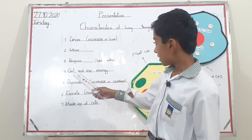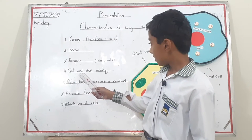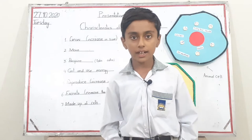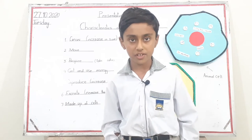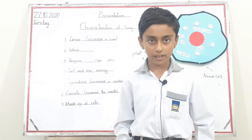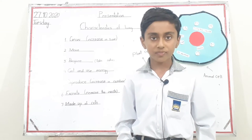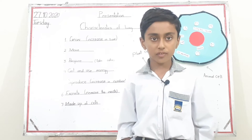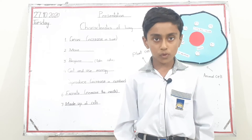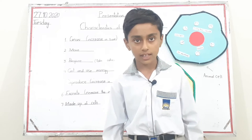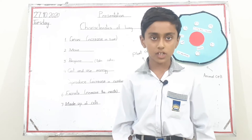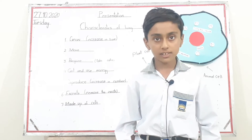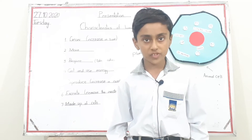The fourth characteristic is get and use energy. Living things get and use energy. I get energy and I use energy. Human beings get energy from food, and food comes from plants and other animals. Plants get energy from sunlight.